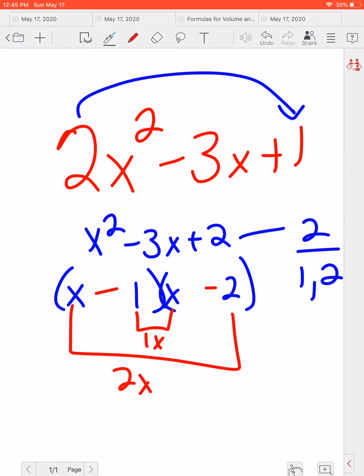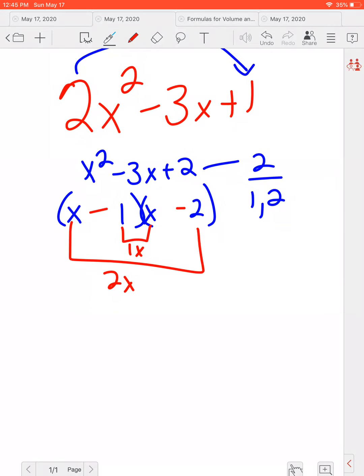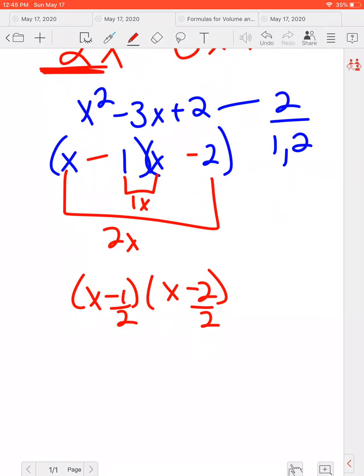So they both have to be negative in this case. Now, remember, we have an extra step here. So we had X minus 1 and X minus 2. But because we multiplied that 2 back, we're going to divide each number by 2 and reduce our fraction. So 1 half doesn't reduce, so it's going to stay.